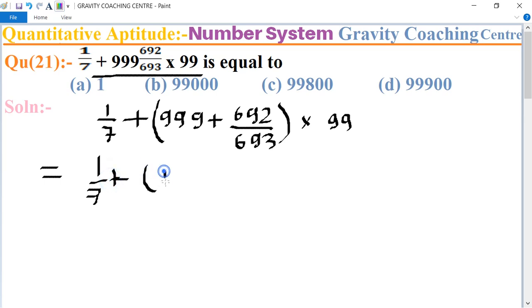Thousand minus 1 plus 692 upon 693, multiply 99. Equal to 1 upon 7 plus.